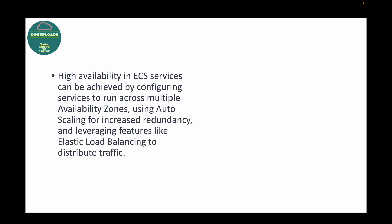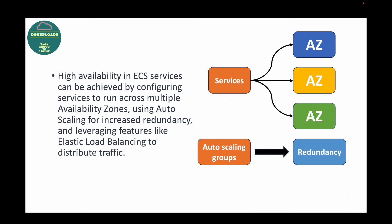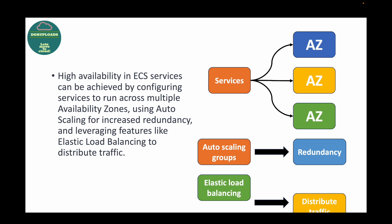The final question is: how can you achieve high availability in ECS services? There are different components you can utilize. First, you can make sure services are running across multiple availability zones. Additionally, you can leverage auto scaling groups to increase the redundancy of your resources. You can also leverage load balancing to distribute traffic across multiple tasks — for example, if you have three tasks, load balancing will distribute traffic across all three tasks to ensure your application has high availability when running in ECS.